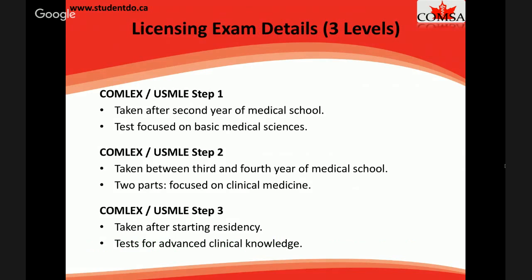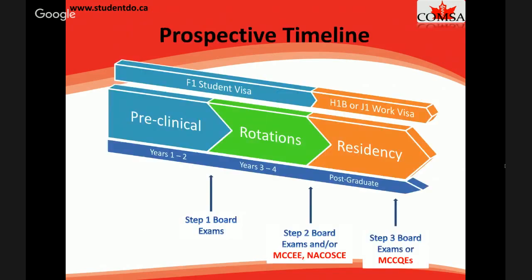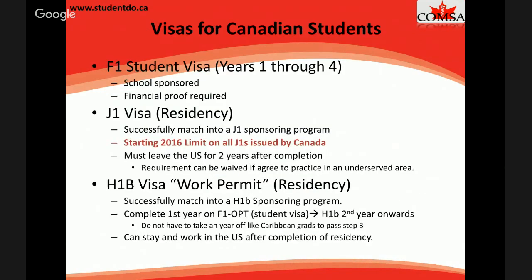The US licensing exams break down as follows: Step 1 is taken right after second year of medical school and tests basic science. Step 2 is taken between third and fourth year and focuses on clinical medicine. Step 3 is taken in the first year of residency and covers advanced clinical knowledge. COMLEX has counterparts to each of these.